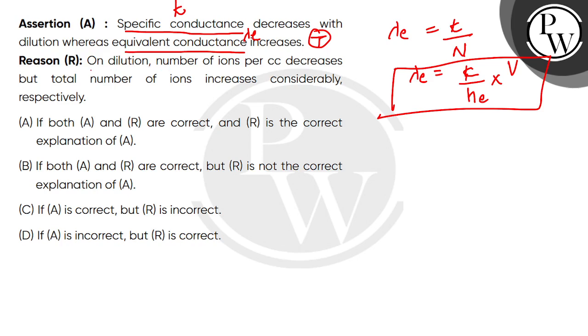So respectively manner me reason likha hua hai, meaning this portion is applicable for specific conductance, which is absolutely correct. Specific conductance decreases because per volume the number of ions decrease.